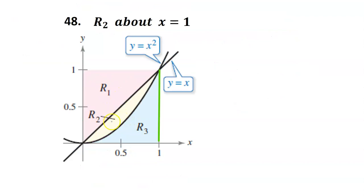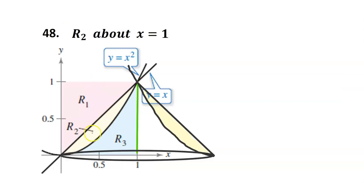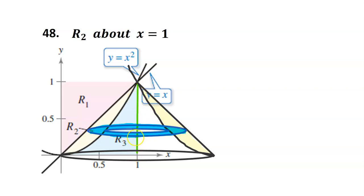For number 48, we will rotate the yellow region R2 around the line x equals 1. When you rotate region R2 around the line x equals 1, it forms a solid in the shape of a cone with an inverted funnel carved out of the middle of it. A slice of the solid will be a washer, a disk with a hole in it. We can use washers like this one to calculate the volume of the solid. Because the washers are stacked vertically, ultimately we will have to integrate with respect to y. We will have to write all functions in terms of y, so instead of x squared we will use the square root of y, and instead of x we will use y.